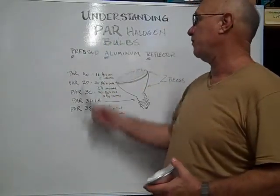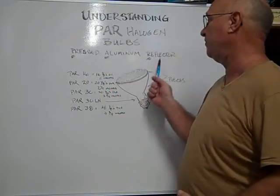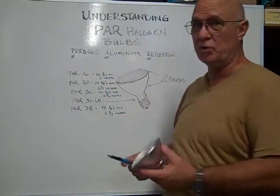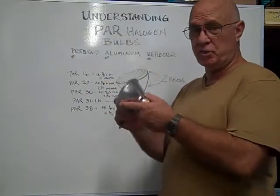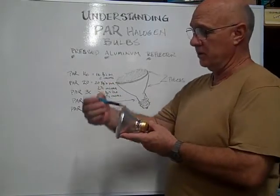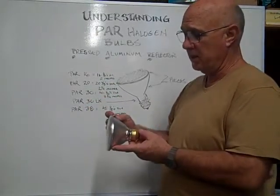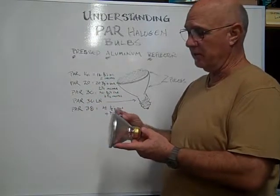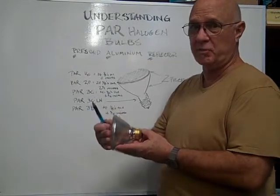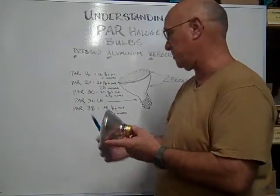The PAR stands for pressed aluminum reflector. When they say pressed aluminum reflector, it's two pieces. The lens is one piece, and the base and the reflector are the other piece, and they're pressed and welded together, so to speak.